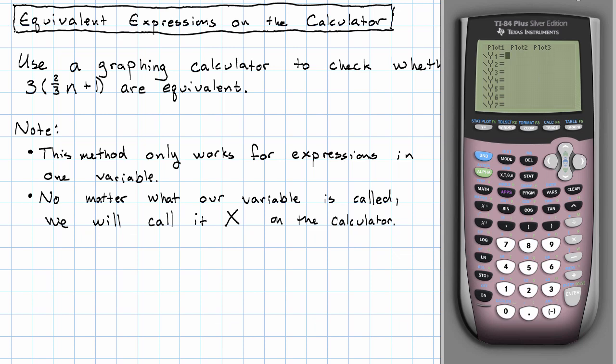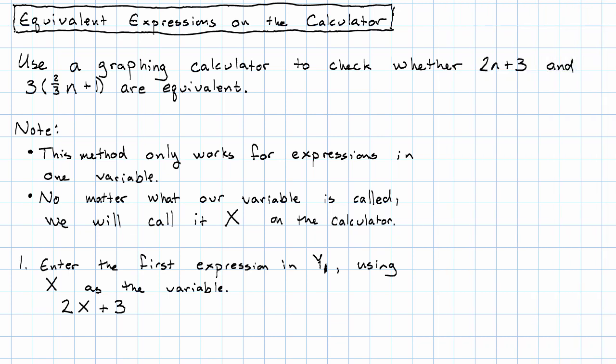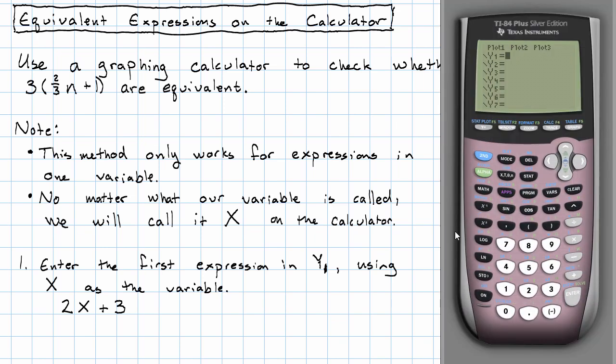So here's what we're going to do. We'll enter our first expression in Y1 using capital X as the variable. Remember, our first expression was 2n plus 3. We're going to enter 2 capital X plus 3. So 2, to get the capital X, we press this button right here, underneath mode to the right of alpha. This is the enter my variable button, plus 3.